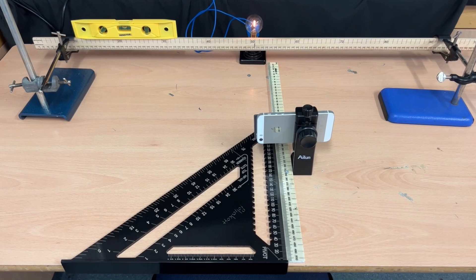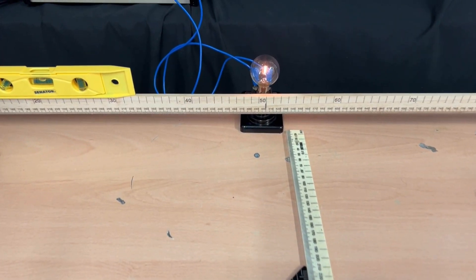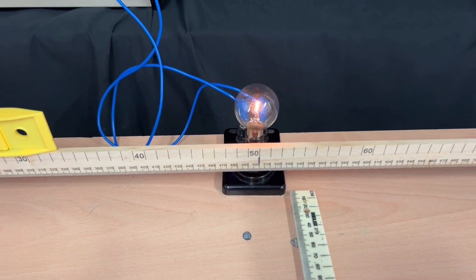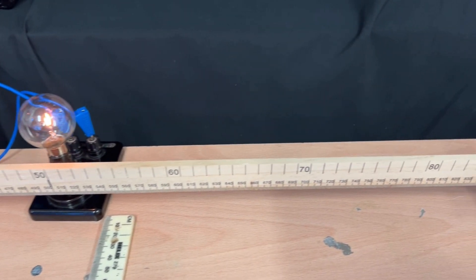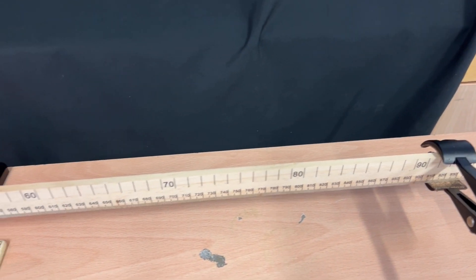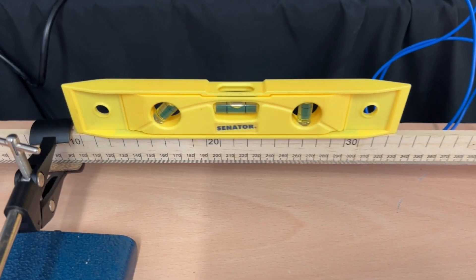So let's look at the setup. I've got one ruler front to back to measure the distance the mobile phone is away from the main ruler which is going across the back. I've made sure that main meter ruler is level using a spirit level and I've got a filament bulb at the 50 centimeter mark.